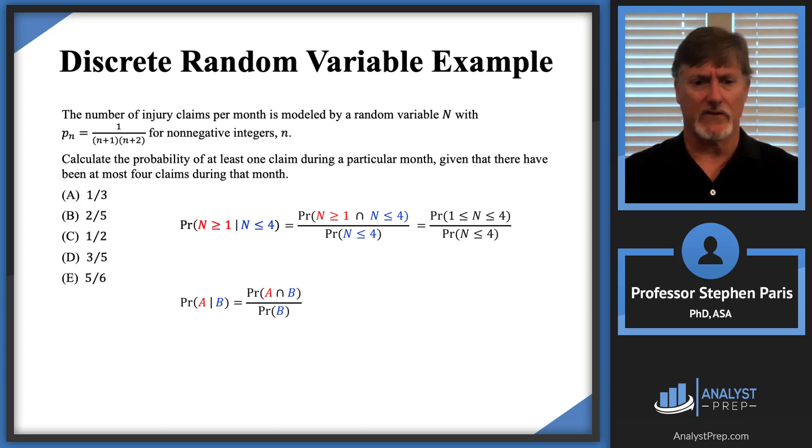Let me take out some of the extra stuff and get to the punchline. What we seek is the probability that N is between 1 and 4 inclusively, divided by the probability that N ≤ 4.